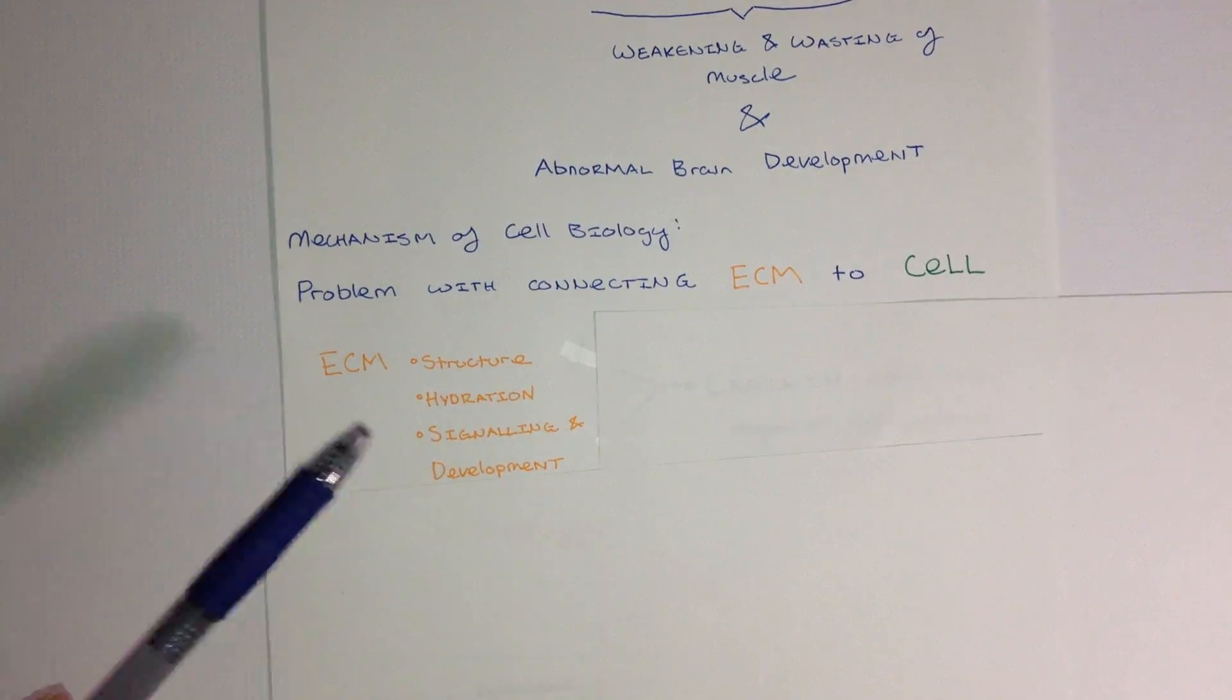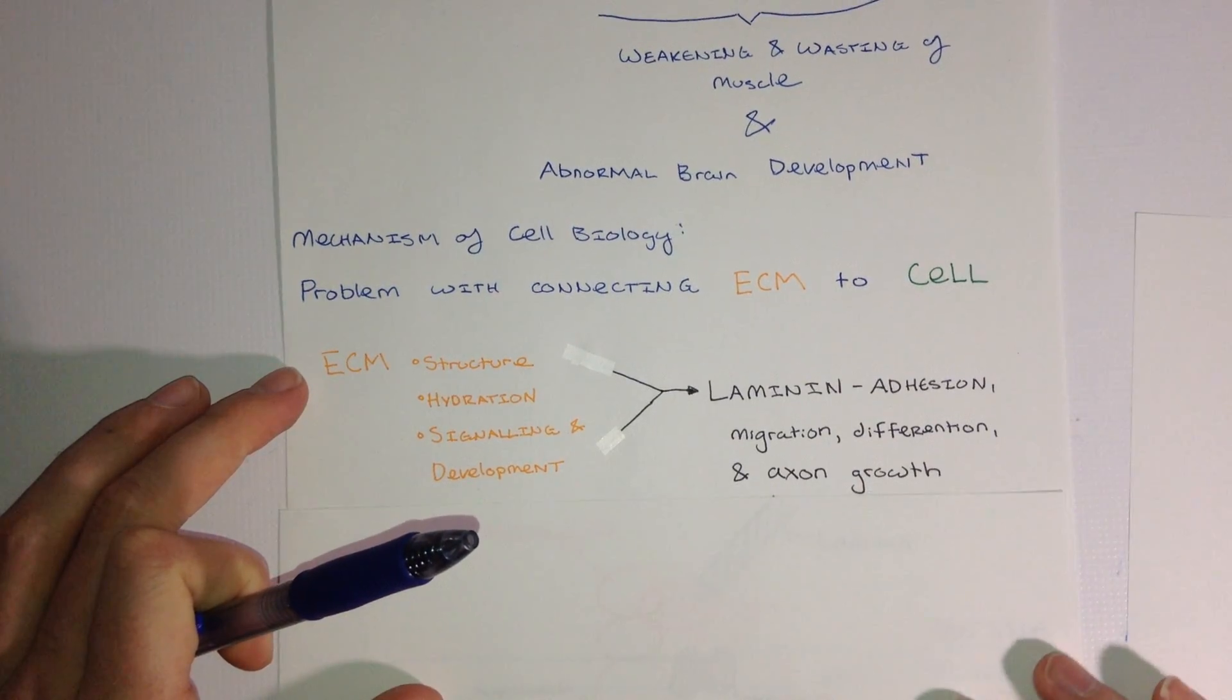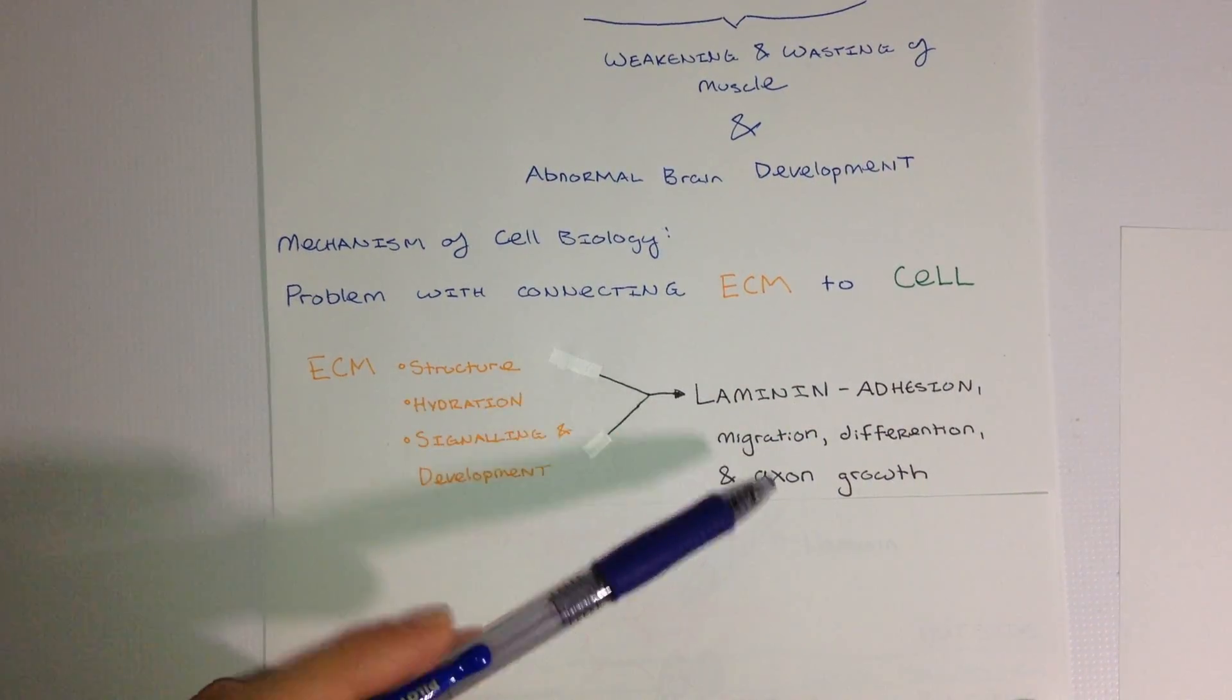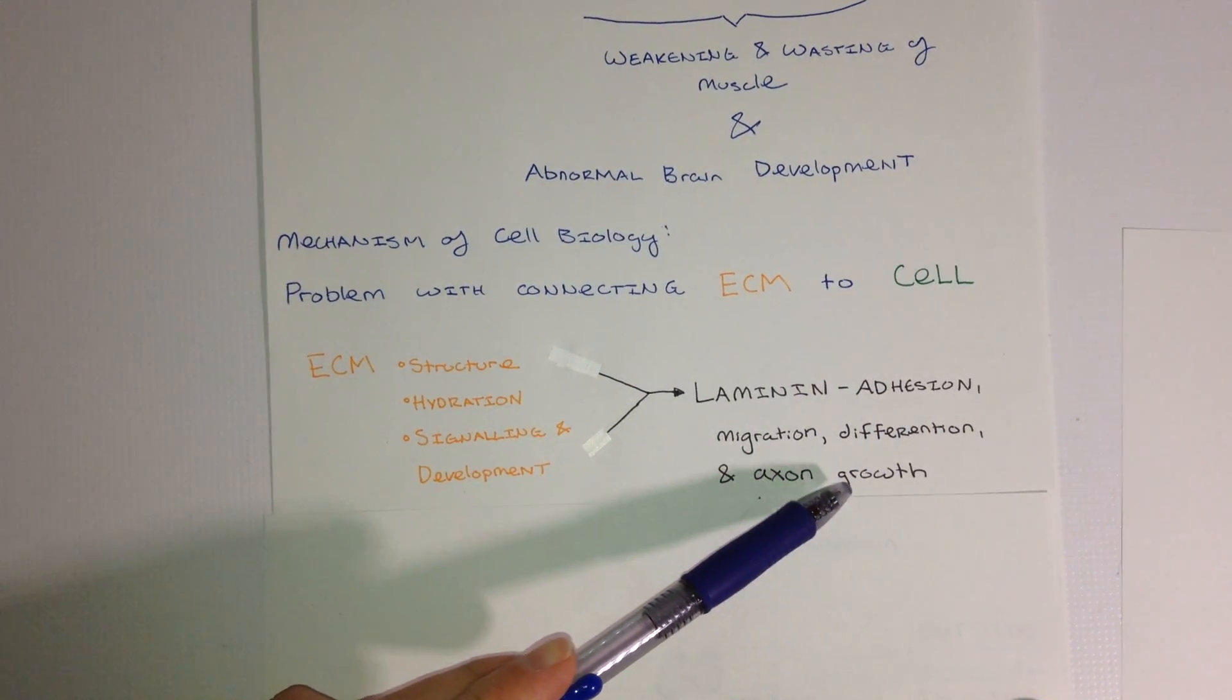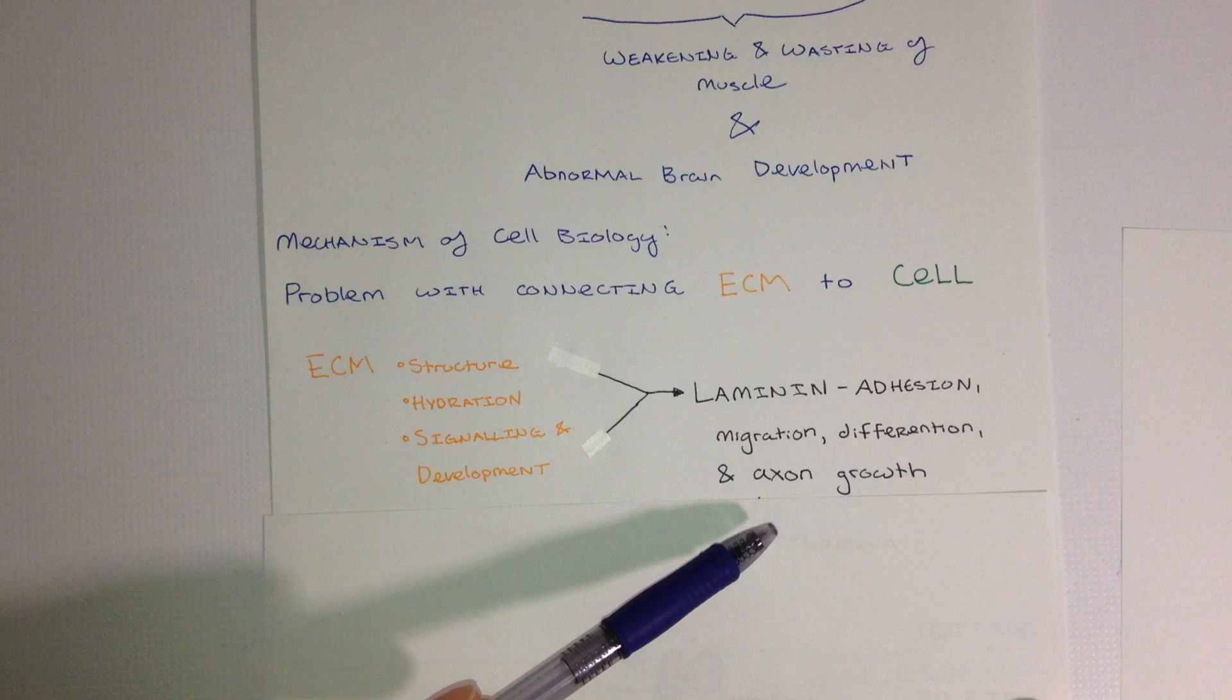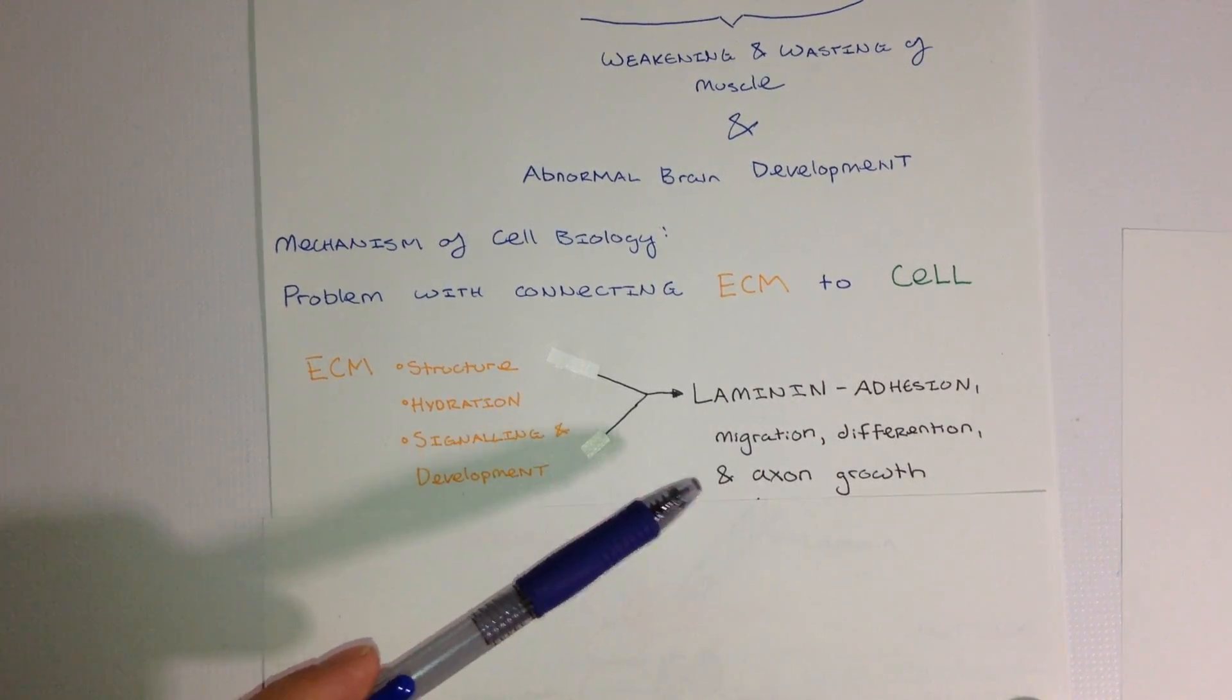And one protein involved in this process is called the laminin protein. The laminin protein promotes adhesion between cells, which is a structural function. And it promotes the migration and differentiation of new cells that are being added to a particular tissue. Additionally, in the brain, laminin is important in axon growth.